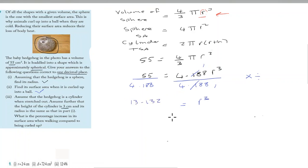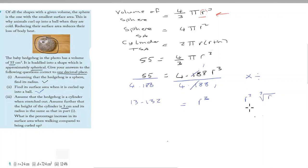Now we want to get r on its own. We have r to the power of 3, and the opposite of an index is a root. The opposite of cubing is the cube root. Just like the opposite of multiplication is division, here we take the cube root of both sides — these cancel out, leaving just r.